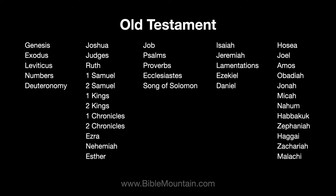Let's take a look at the Old Testament. There are 39 books in the Old Testament. The first five books are known as the Books of Moses — sometimes called the Book of Law or the Pentateuch. That is Genesis, Exodus, Leviticus, Numbers, and Deuteronomy. Those books tell us about events from creation up to about 1500 BC.